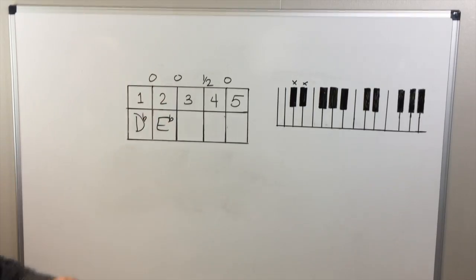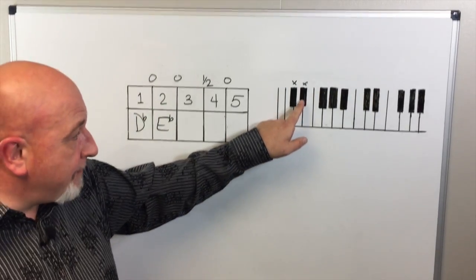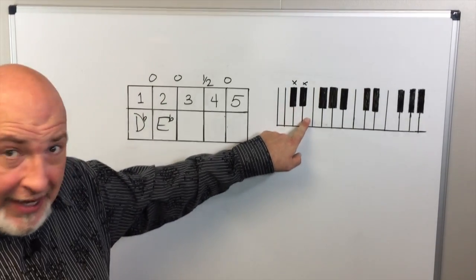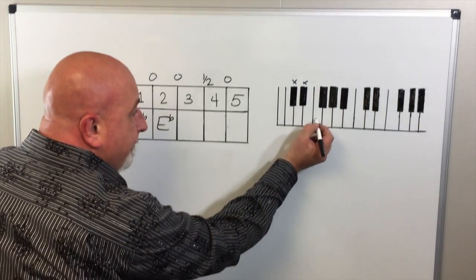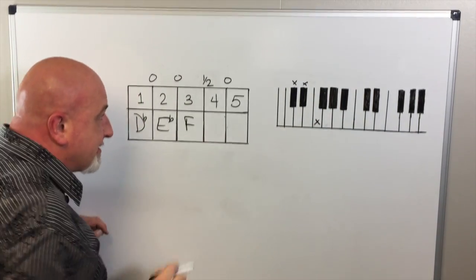Between the second and third position, we have a whole step. So that means we're going to skip E and we'll land on F. So the third position of our scale is F.